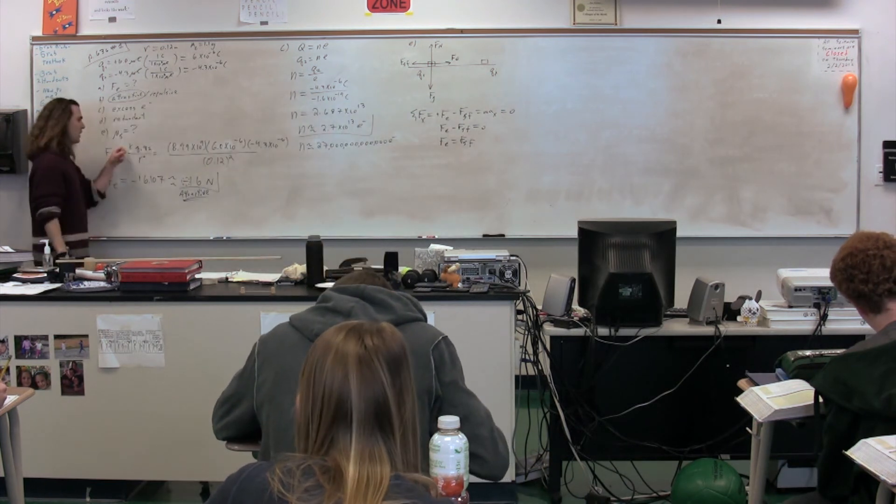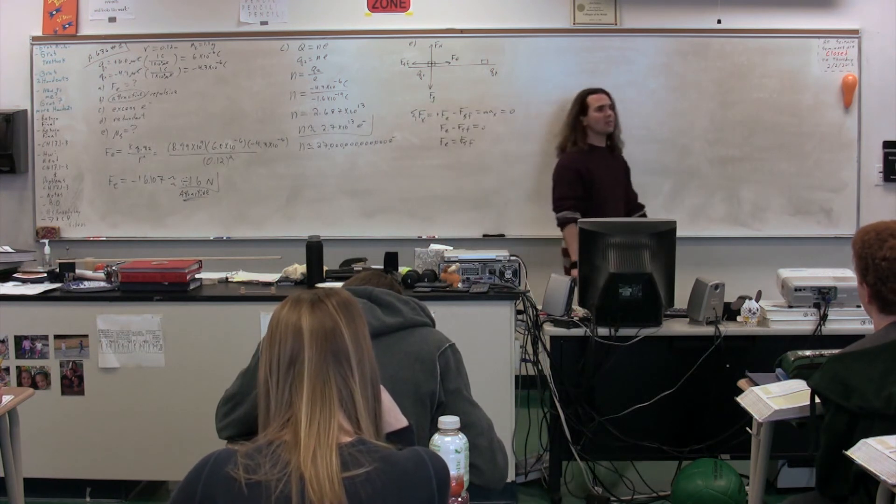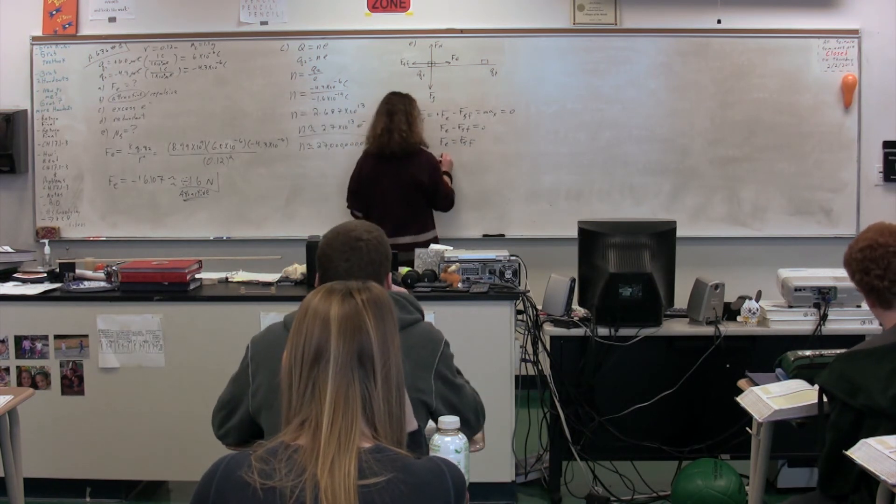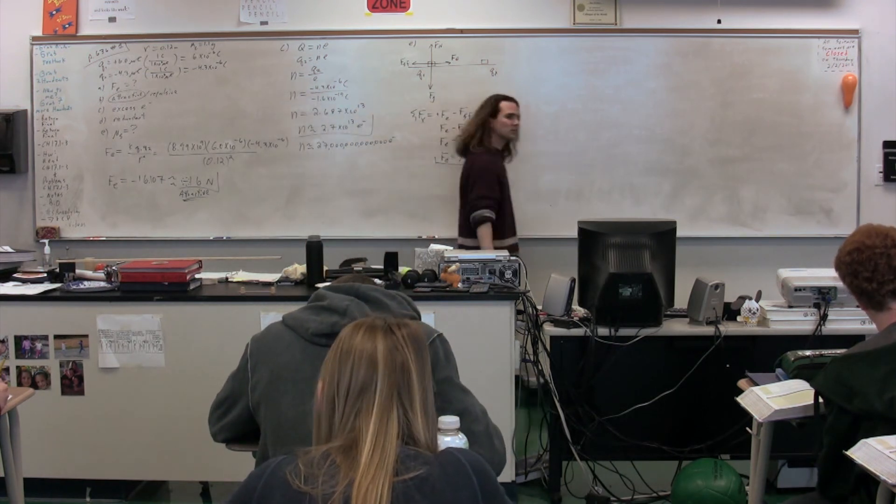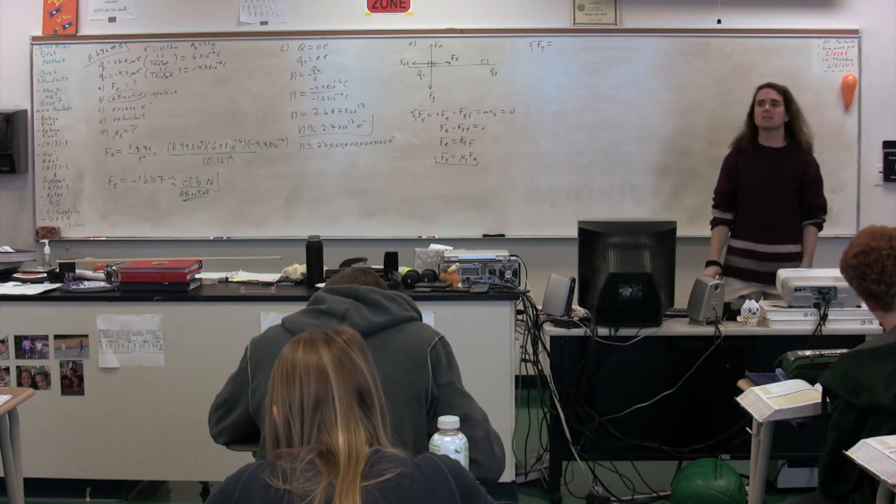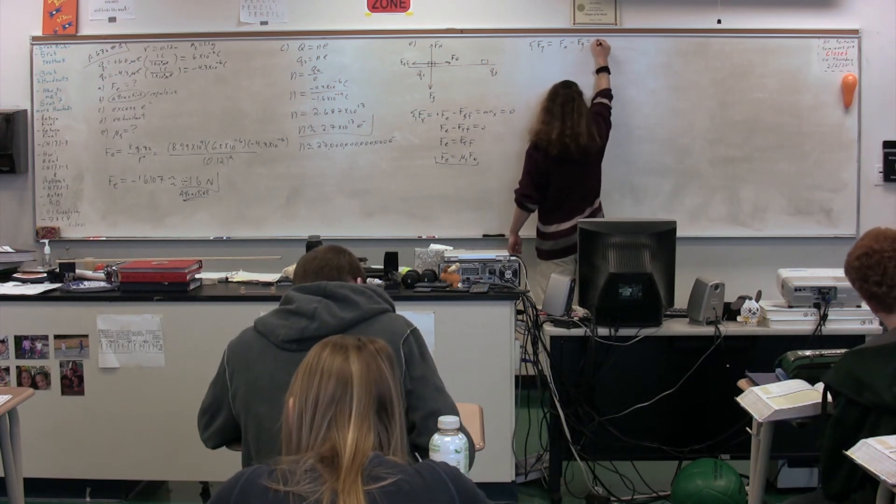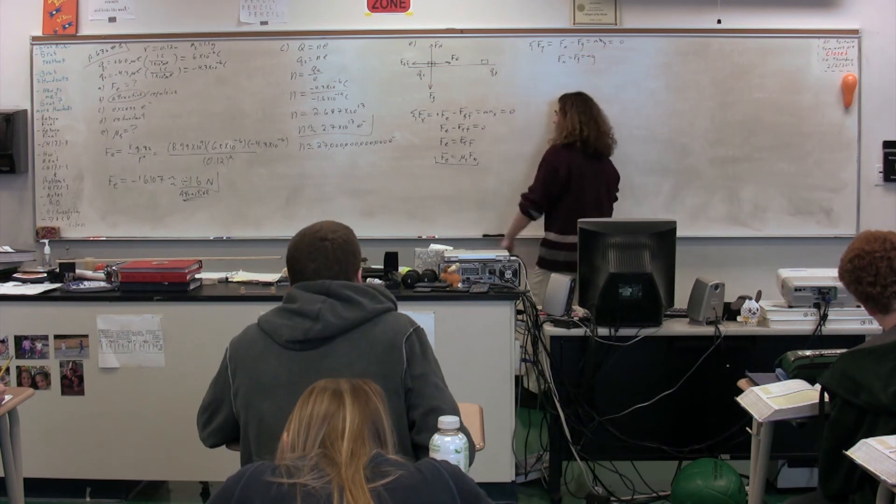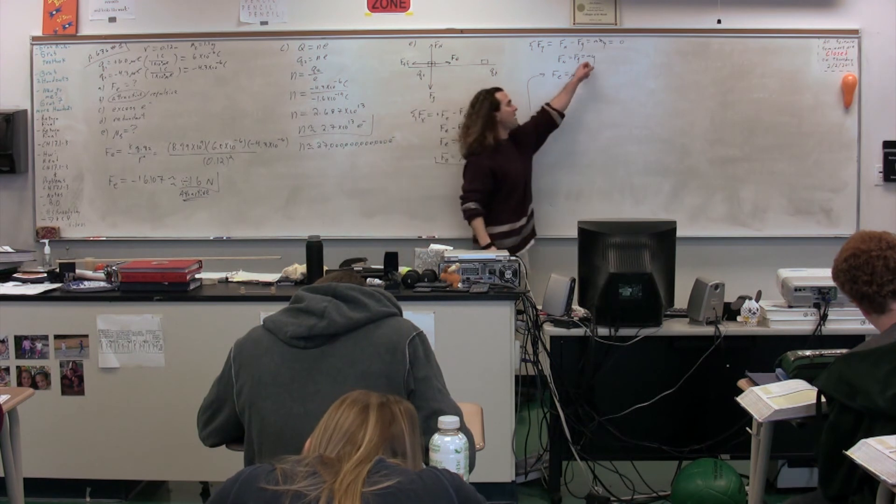Normally we would substitute in the equation for the electric force, K Q1 Q2 over R squared, into this equation. There's no need to do that right now because we've already figured out the number. So we're just going to leave the electric force on the left-hand side. On the right-hand side, Claire, the coefficient of static friction times the force normal. We're kind of stuck. So we can sum the forces in the Y direction. Force normal minus force gravity equals mass times acceleration in the Y direction. What's the acceleration in the Y direction? Zero. Therefore, force normal equals the force of gravity which equals mass times the acceleration due to gravity. We can now combine these two equations. We have the electric force equals mu s times m times g because the force normal is equal to mass times acceleration due to gravity.